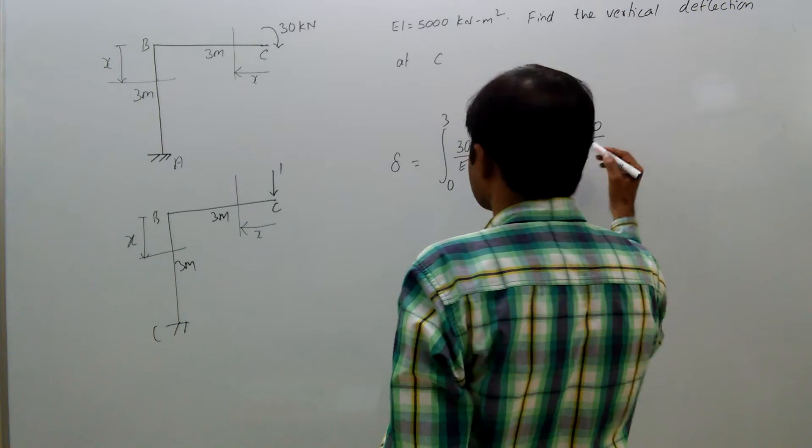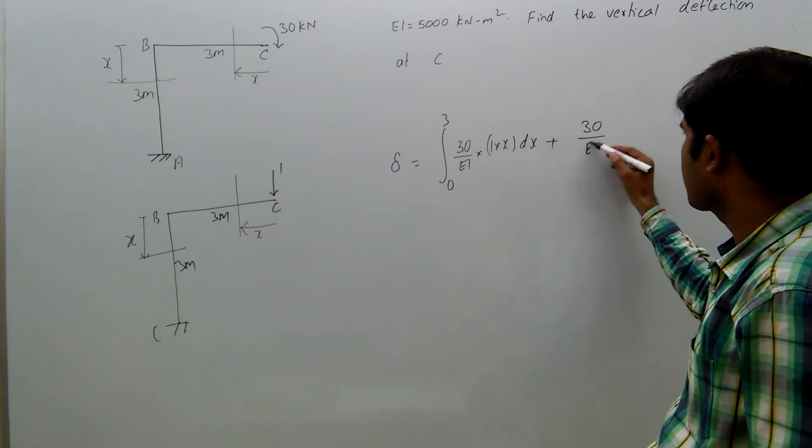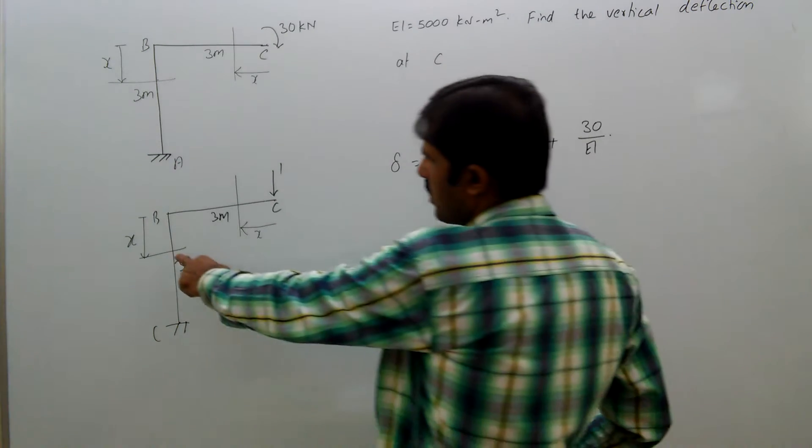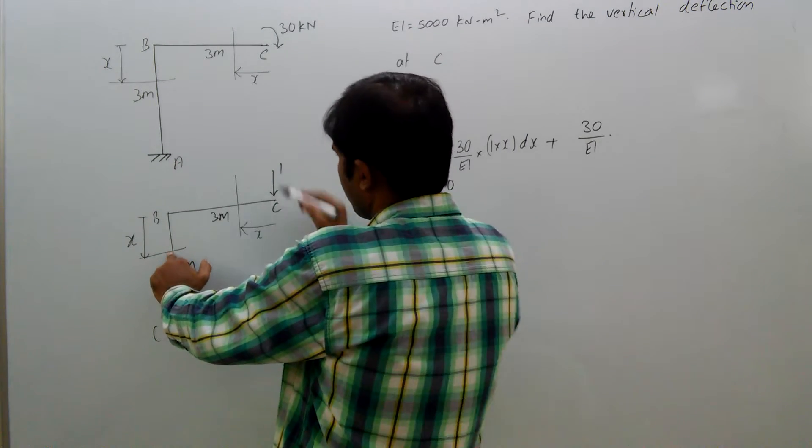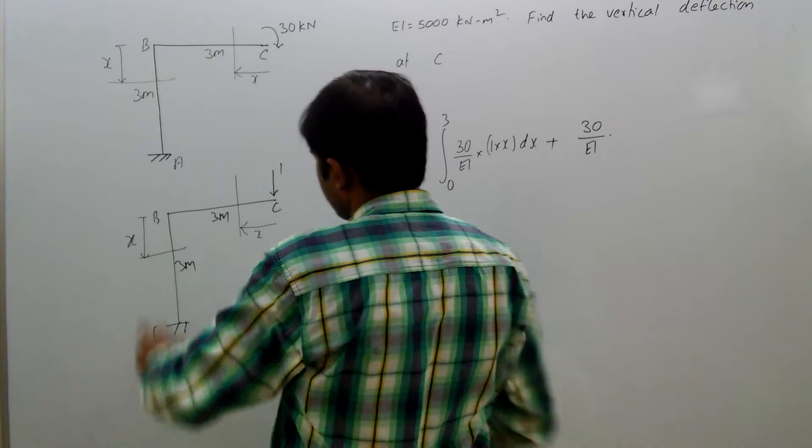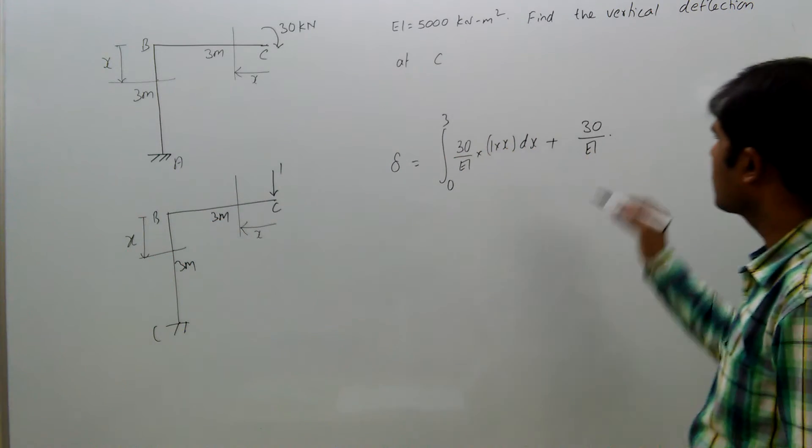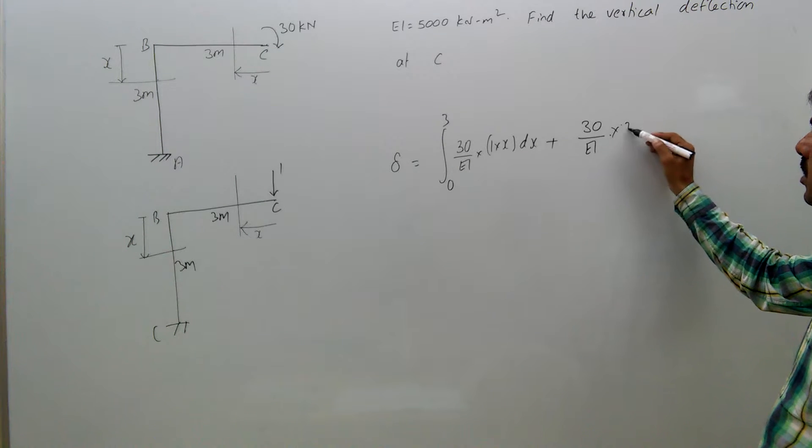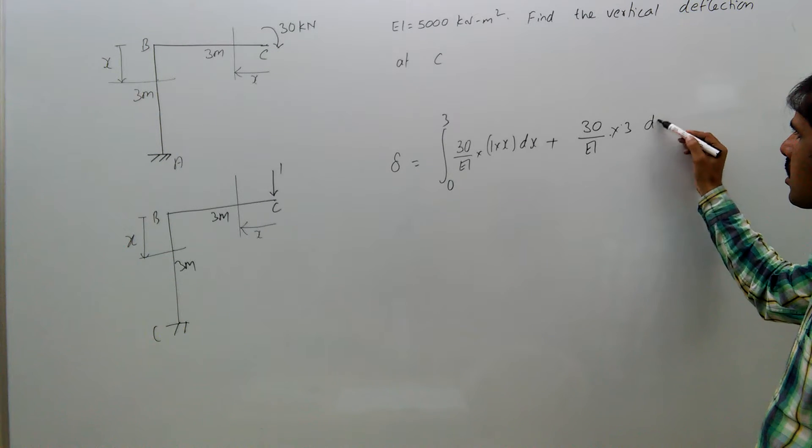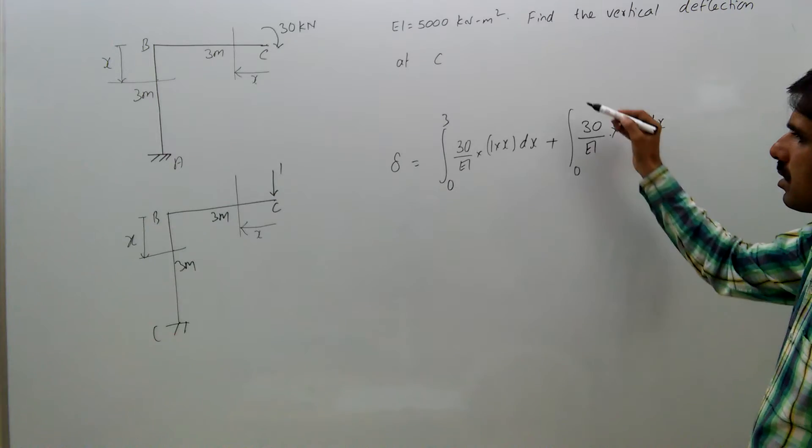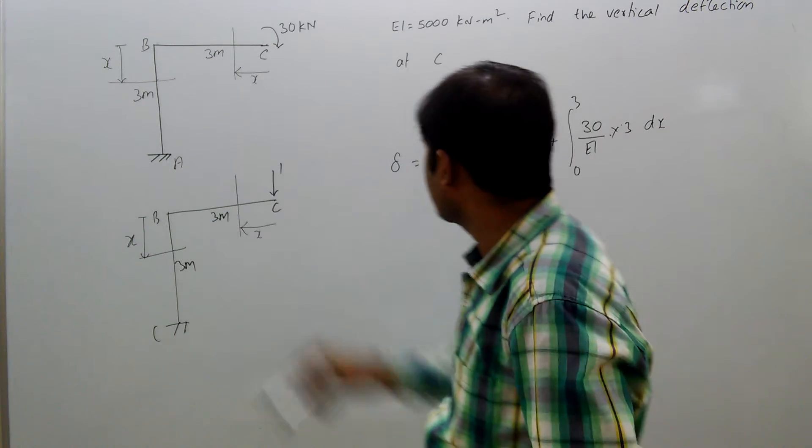That is the bending moment due to loading by EI. Here bending moment is 1 into 3, 1 into 3. Here 1 into 3, that is 3 dx, integral 0 to 3. Here, because this also 0 to 3 only.